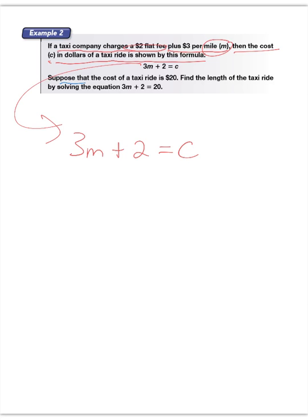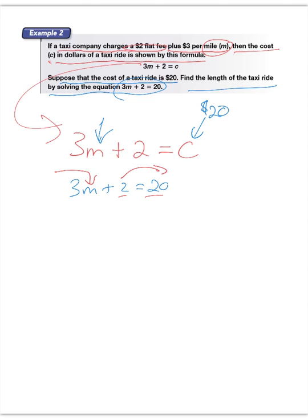And then it says suppose that the cost of the taxi ride is $20, so we know that that is $20. Find the length of the taxi ride by solving that equation. So you're trying to find M, which represents the number of miles, that would be the length. So you have 3M plus 2 is equal to 20. So the first thing you want to look at is your combining like terms, which means that term and that term are both constants. I need to get them on the opposite side of where the variable is at. We know the variable is right there, which means the 2 needs to go to the right.